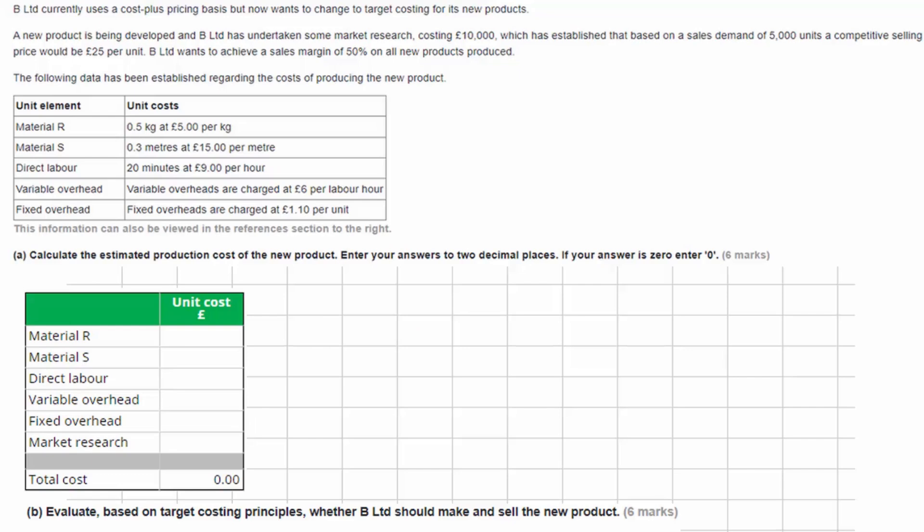Here's task four of the second sample assessment for applied management accounting. B Limited currently uses a cost-plus pricing basis but now wants to change to target costing for its new products. A new product is being developed and B Limited has undertaken some market research costing £10,000. Remember that if there's a number provided in the text, we'll probably need to use that number somewhere in our answer. You have a highlighter tool in your computer-based software, so it's useful to highlight things to make sure you don't forget them. They've also established that based on sales demand of 5,000 units, a competitive selling price would be £25 per unit. B Limited wants to achieve a sales margin of 50% on all new products produced. The following data have been established regarding the cost of producing the new product, including the cost of material R and material S, labor costs, variable overheads, and a fixed overhead absorption rate of £1.10 per unit.